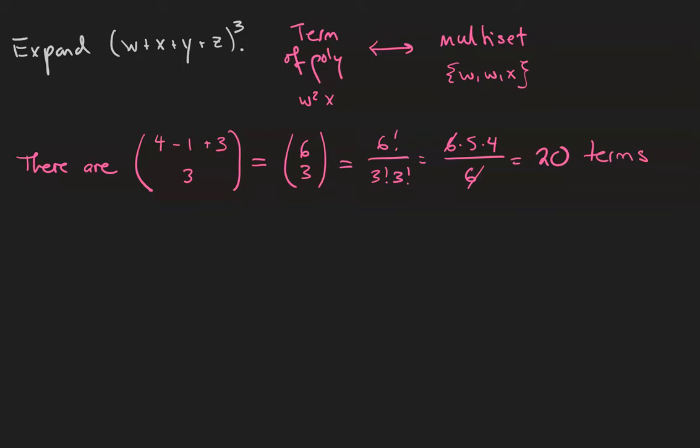The coefficients on the terms are all of the possible multinomial coefficients, where n is equal to 3, and all the ri's sum to 3. However, because of symmetry, there really aren't that many options. We've got 3 choose 1, 1, 1, which is equal to 3 factorial divided by a bunch of ones, which makes 6.